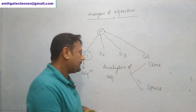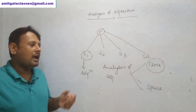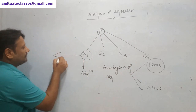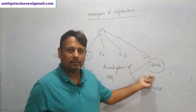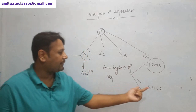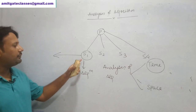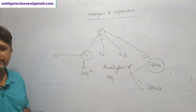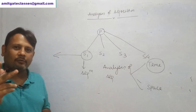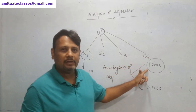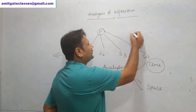What is time? If I'm going to implement an algorithm, how much time my program is going to take — that is the time complexity of that program. What is space? Space is about how much extra space is required to implement this algorithm — that is space complexity. While doing analysis of algorithm, we must consider two things: time complexity and space complexity.